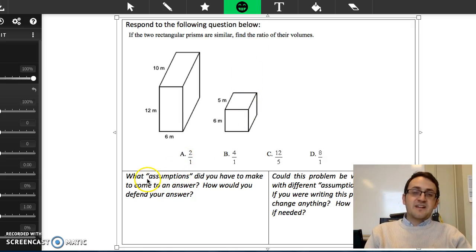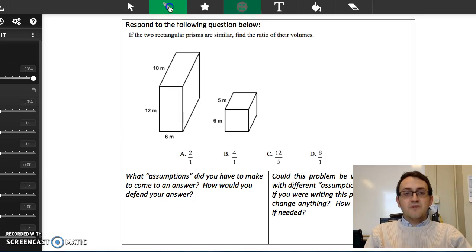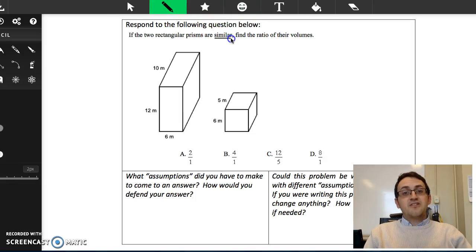The first thing that I think is important when we're looking at an ISTEP or SAT or ACT style question is thinking about what assumptions we need to be able to solve this problem. We're going to read through the directions here and think about what some of these terms mean. So we have two rectangular prisms and I'm going to circle or underline two things that I think are pretty important: this concept of similar and then ratios of volumes.